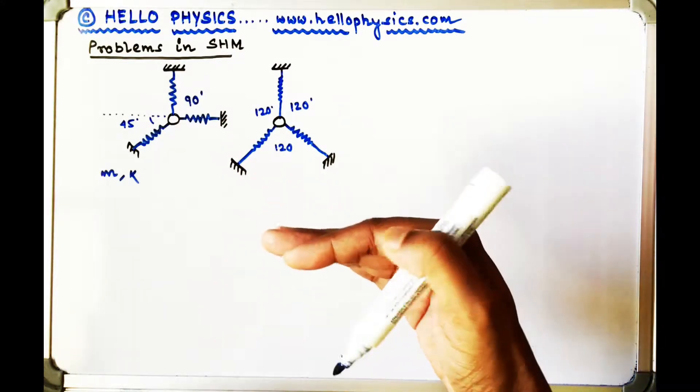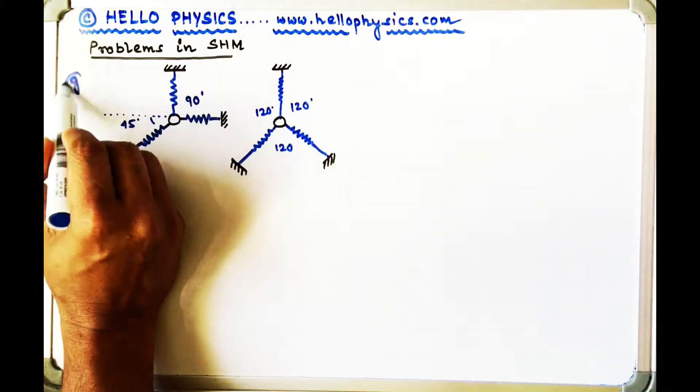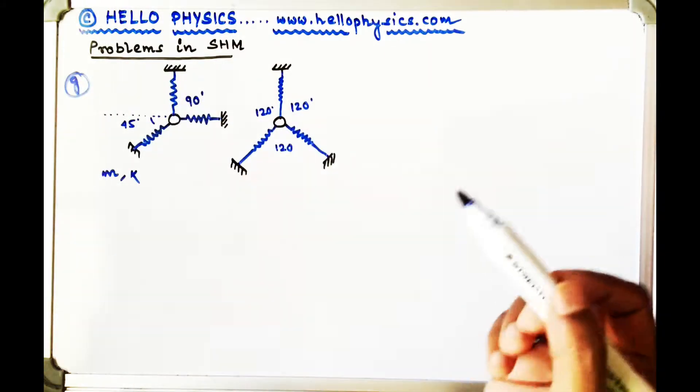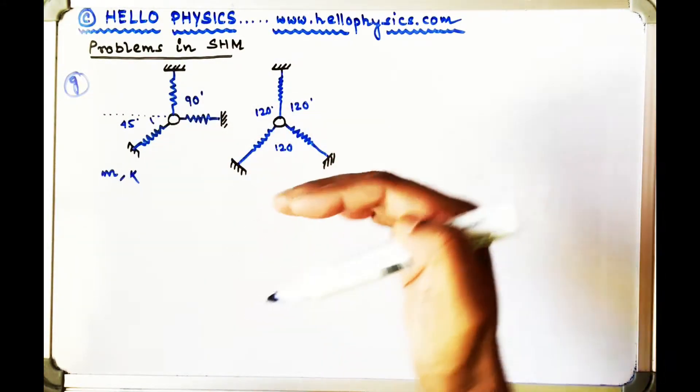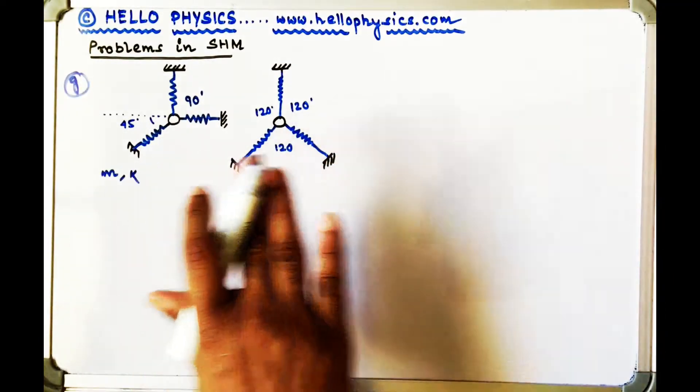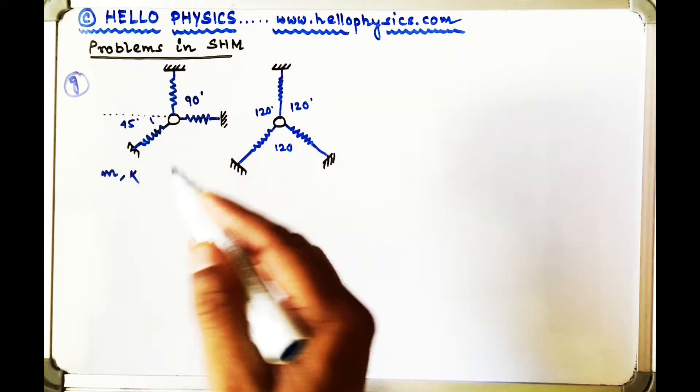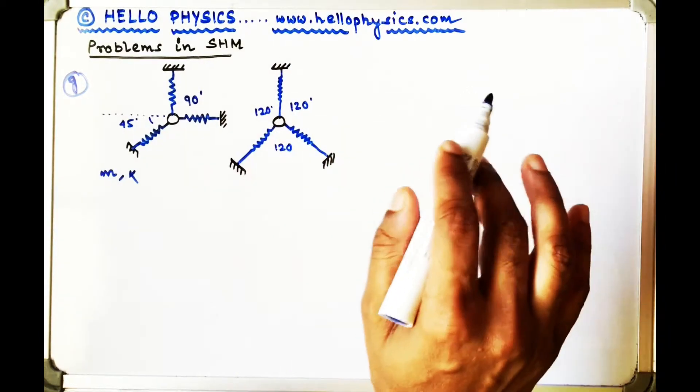Also, let us ignore gravity over here. So although they are kept at the same horizontal plane, as a result of the weight of the mass, there is no movement in the downward direction. They are at the horizontal plane and kept in a gravity-free space.